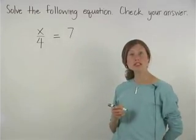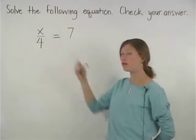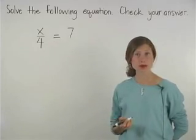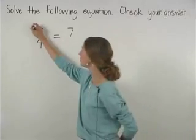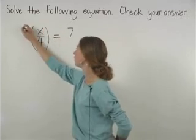In this problem, notice that x is being divided by 4. So to get x by itself, we need to multiply both sides of the equation by 4.